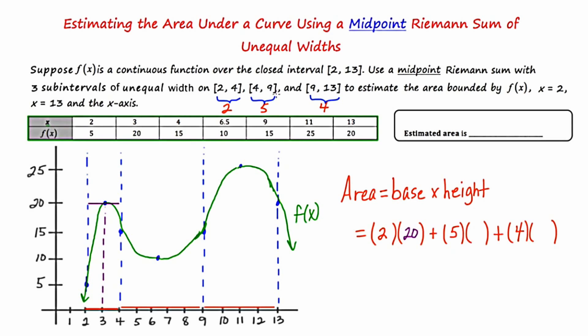Now my second interval is from 4 to 9, which is a total width of 5. And half of 5 is 2.5. And if I move 2.5 in either direction of the endpoints, I end up at 6.5. So I'm going to cap off this rectangle at 10. So the height of the second rectangle is 10.